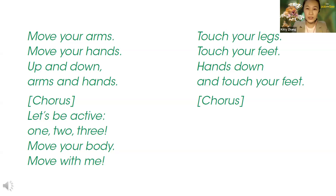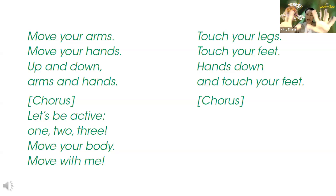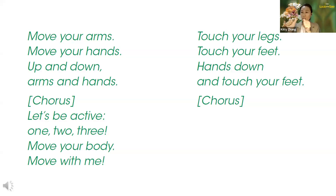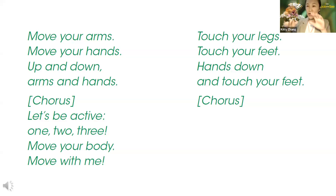Let's see the lines and how we do this song. Move your arms — can you stretch your arms like this? And then move your hands — shake and wave your hands up and down. Arms and hands, stretch. Let's be active! One, two, three — show me your three fingers. Move your body like you're dancing, move with me, point to yourself. And the next part: touch your legs, touch your feet — bend over and touch your feet. Hands down, down, down, and touch your feet.